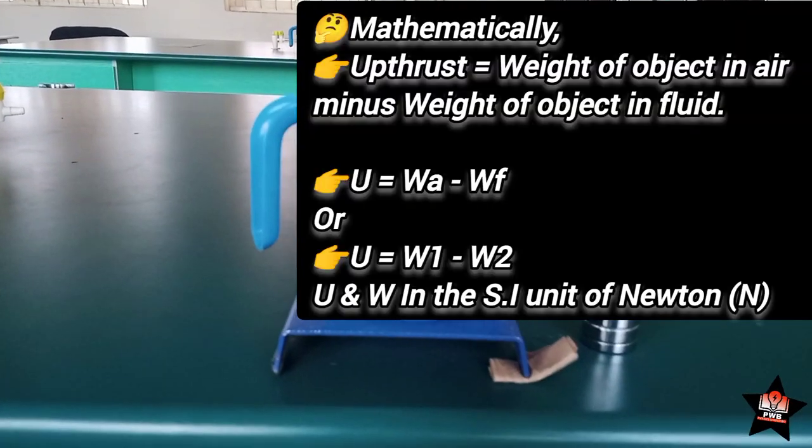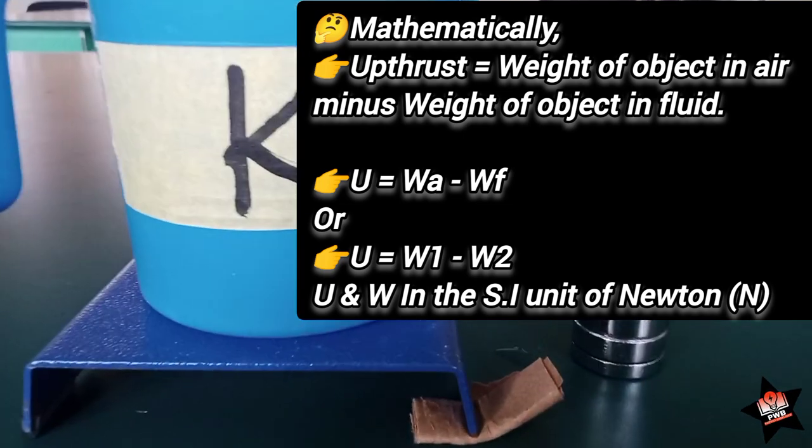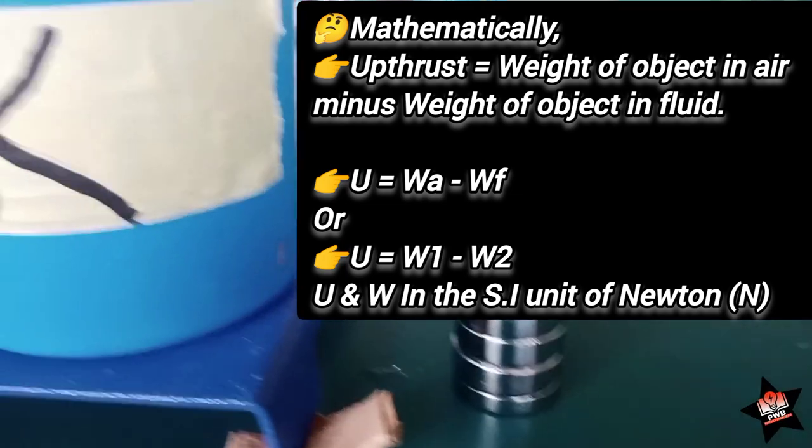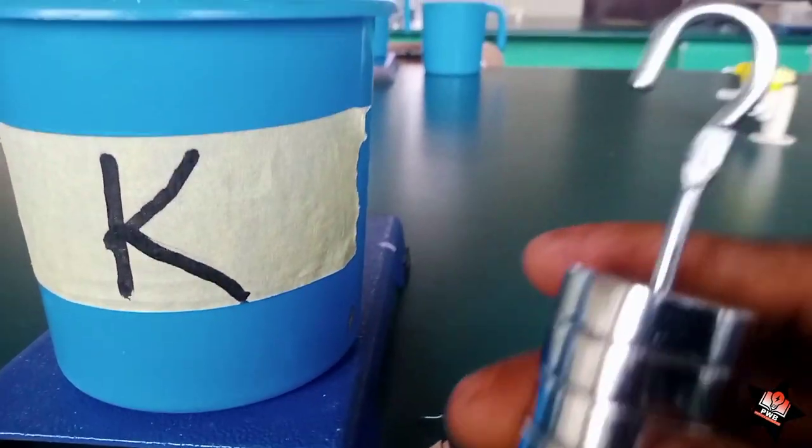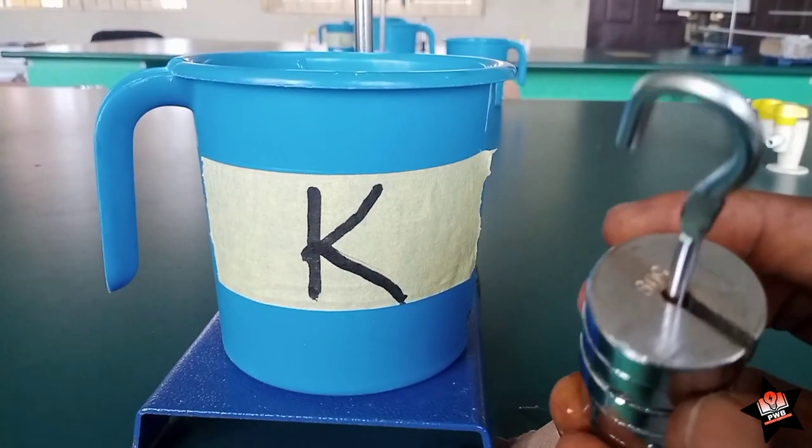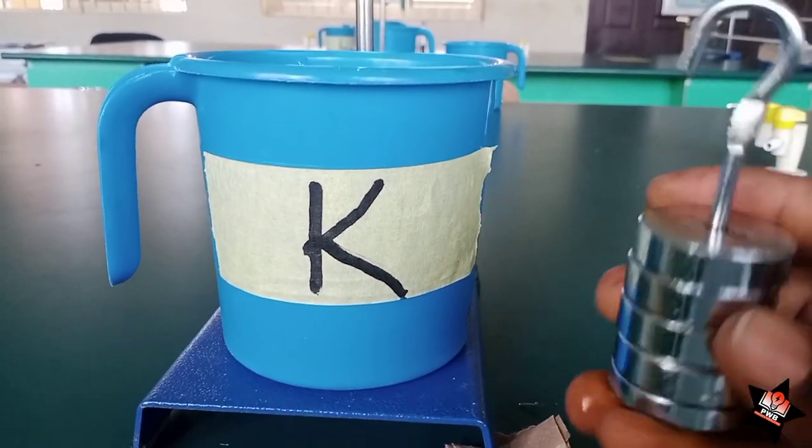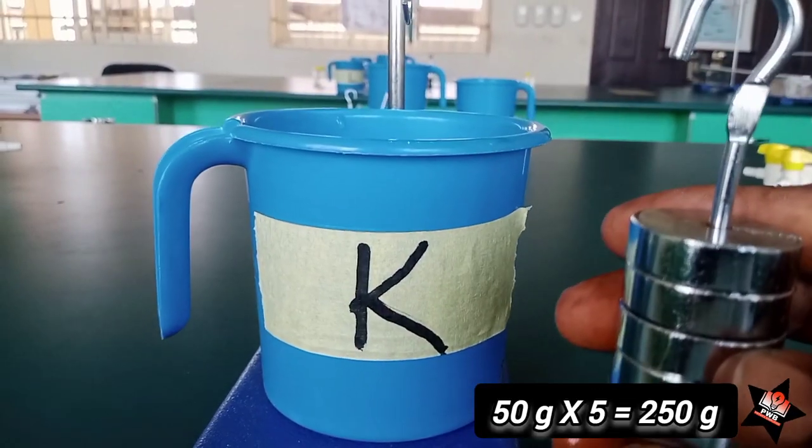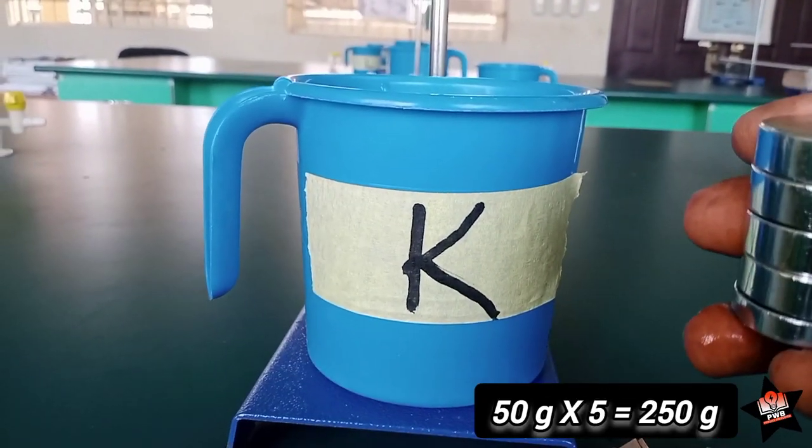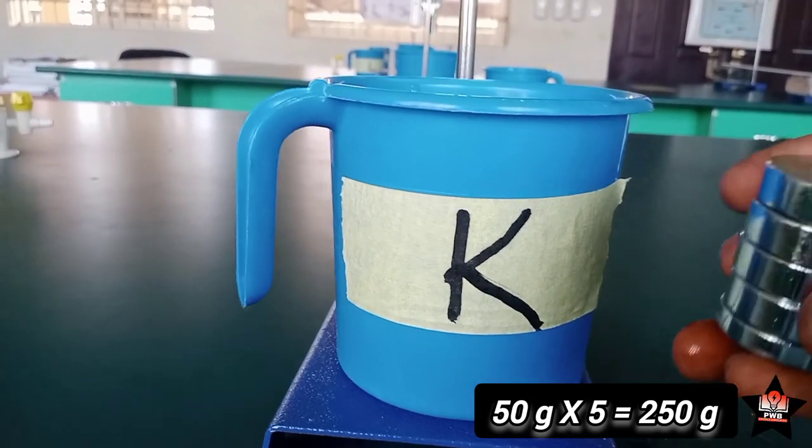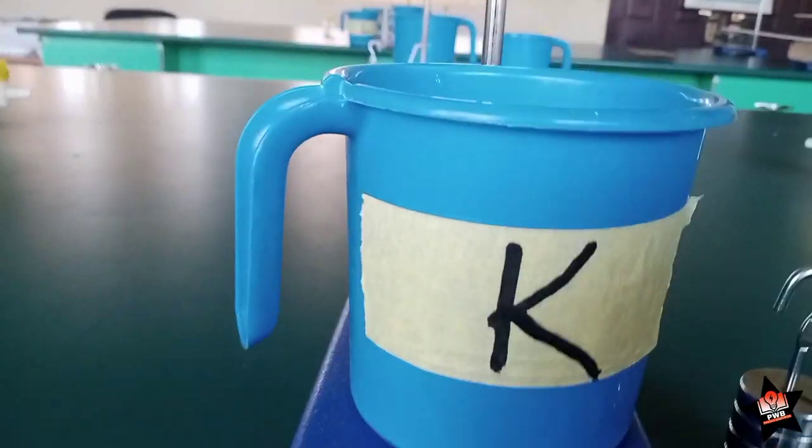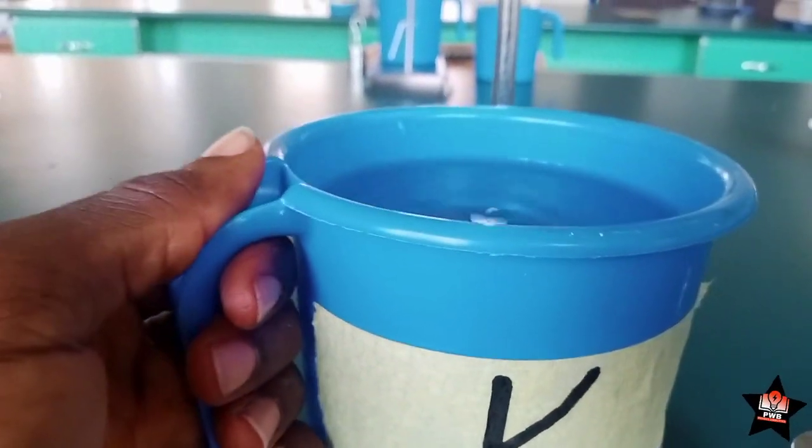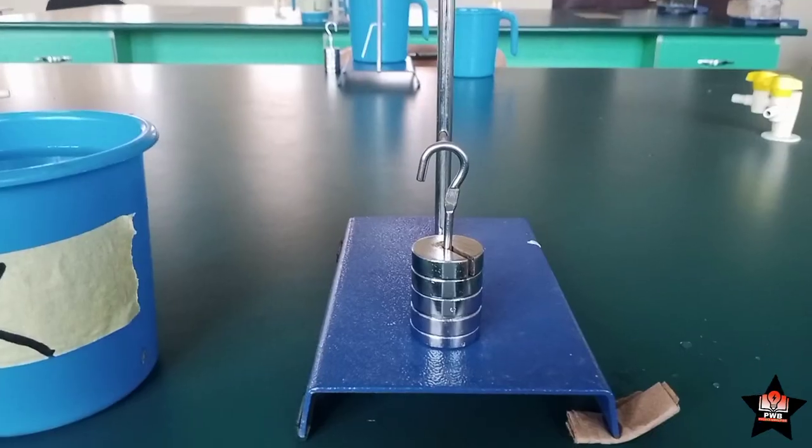So, I'm going to use this little setup here to explain the principle of flotation. These are slotted masses, and the masses are 50 grams times 1, 2, 3, 4, 5. That is 250 grams. So, I'm going to hang this. Container K here is simply water.